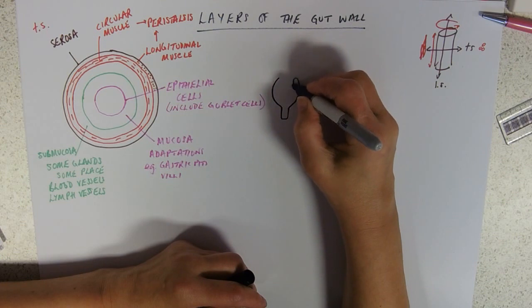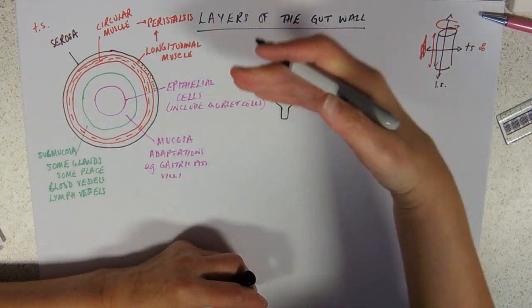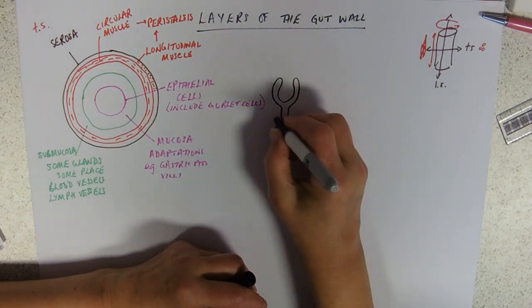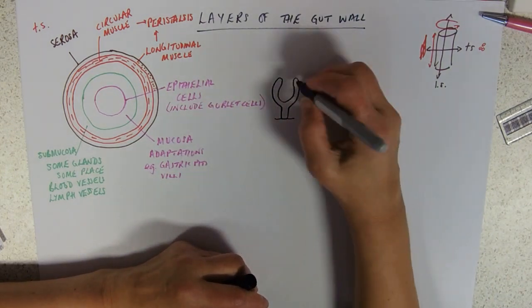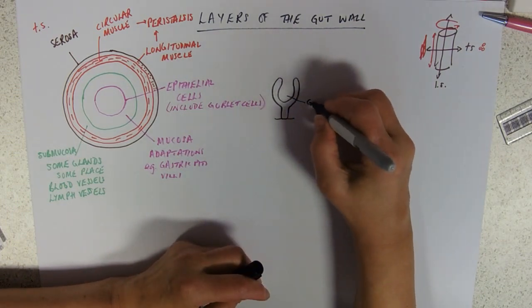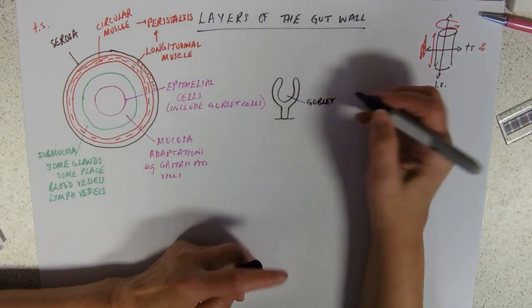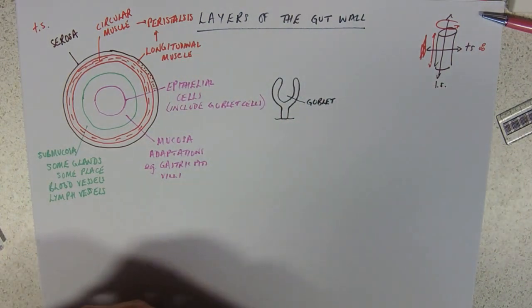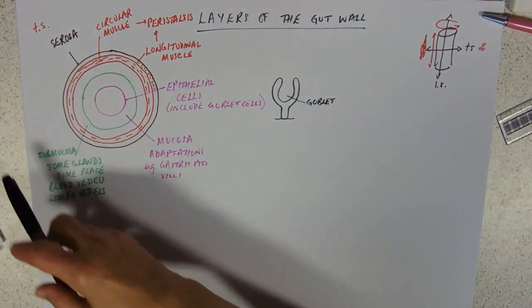These are just epithelial cells. If we chopped one across it's lying on a basement membrane. You can see that it's got this sort of hollow middle which is called the goblet, which is why they're called goblet cells. You can tell these are named by biologists.